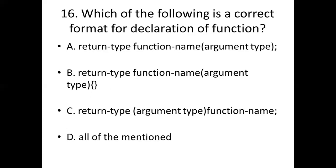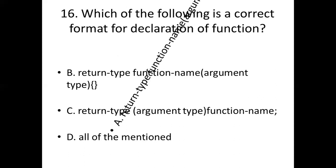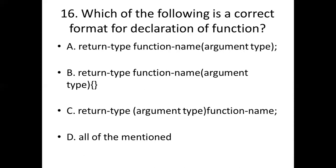Sixteenth bit: Which of the following is a correct format for declaration of a function? Option A is the correct answer. Option A: return type, function name, argument type.